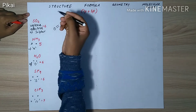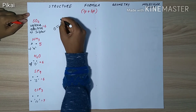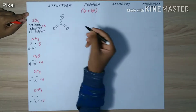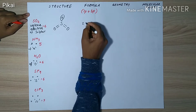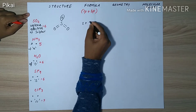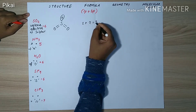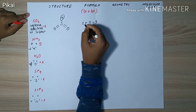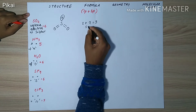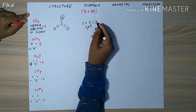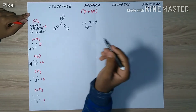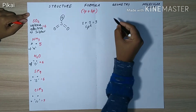We now have two remaining electrons which form one lone pair. From the formula for finding hybridization — lone pair plus bond pair — we have one lone pair and two bond pairs, which gives three. This three indicates one s and two p orbitals, so it comes out to be sp2 hybridization.